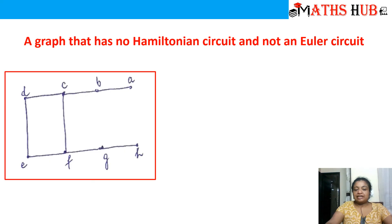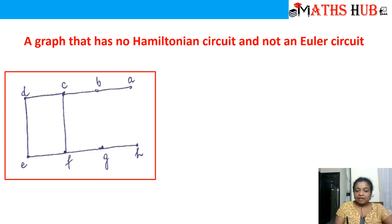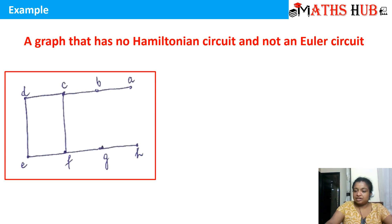A graph that has neither a Hamiltonian circuit nor an Eulerian circuit. The vertices are not of even degree, so it will never possess an Eulerian circuit. For the Hamiltonian circuit, I need to cover all vertices and return to the start. Starting from A: A to B, B to C, C to D, D to E, E to F, F to G, G to H — but I cannot come back to A without repeating vertices. So this graph possesses neither a Hamiltonian circuit nor an Eulerian circuit.